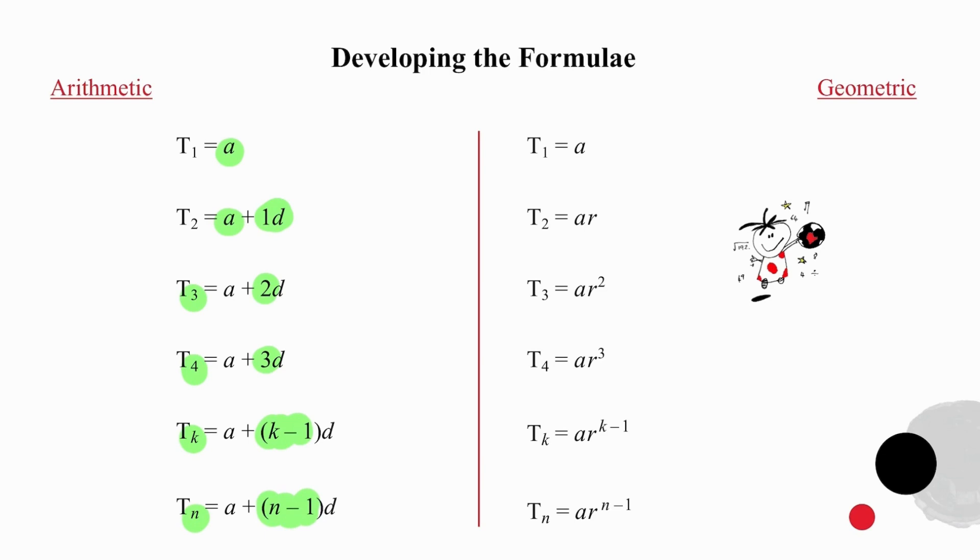Using the exact same logic for the geometric sequence, the first term is just a, the second term has a ratio to the power of 1, third term ratio to the power of 2, fourth term ratio to the power of 3, term k, ratio to the power of k minus 1, and term n, ratio to the power of n minus 1.